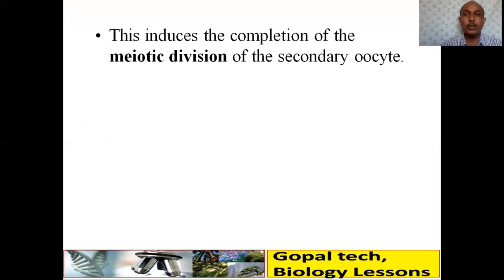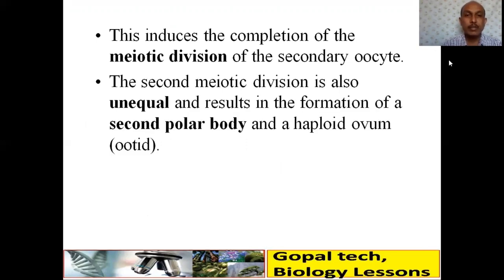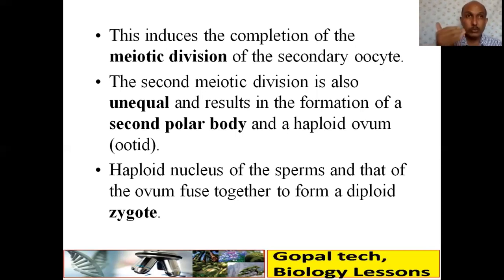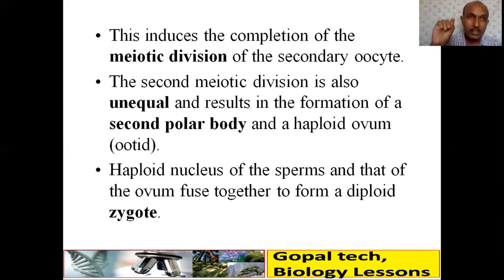Sperm contact induces the completion of the meiotic division of the secondary oocyte — the secondary oocyte only divides after contact with sperm, otherwise it remains as is. The second meiotic division is also unequal, resulting in the formation of a second polar body and a haploid ovum (also called the ootid). The haploid nucleus of the sperm and that of the ovum fuse together to form a diploid zygote.